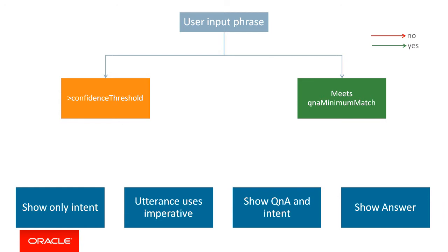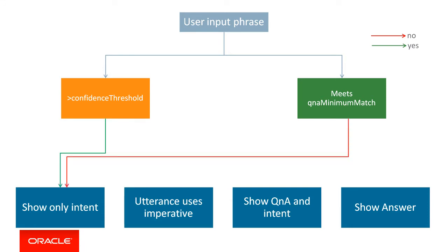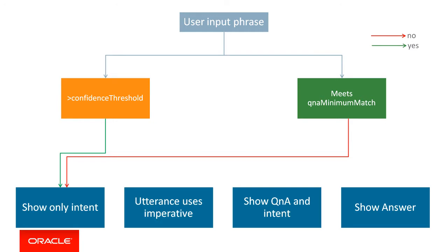The Q&A model, on the other hand, uses something called a Q&A minimum match within the dialogue flow, which defines how many tokens or words should match in a Q&A. So let's briefly look at the different combinations. Firstly, let's look at the case where an input phrase has been resolved above the confidence threshold, but the Q&A model does not resolve it above the Q&A minimum match. In this case, we simply show an intent.